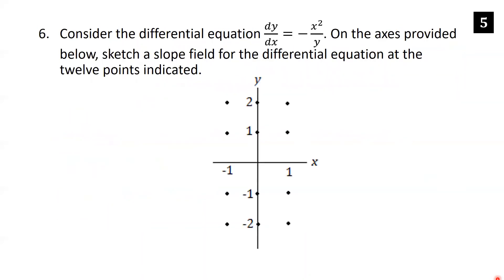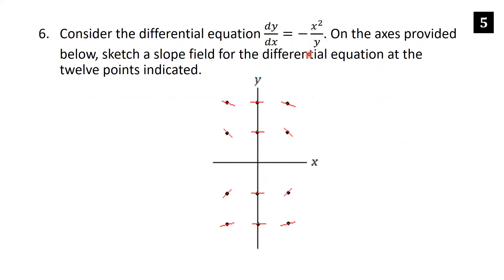Consider the differential equation dy/dx equals negative x squared over y. Sketch a slope field at the 12 points indicated. Notice there are no points on the x-axis, because y equals 0 makes the derivative undefined. So we have 6 points above and 6 below. Whenever x equals 0, plugging in gives dy/dx equals 0, so we draw horizontal tangent segments at those points.